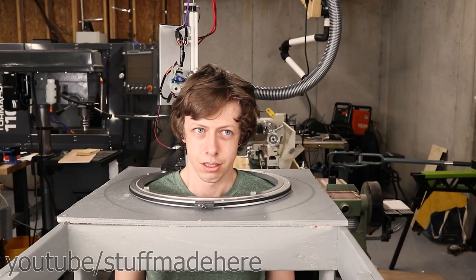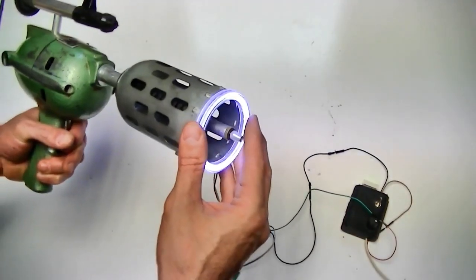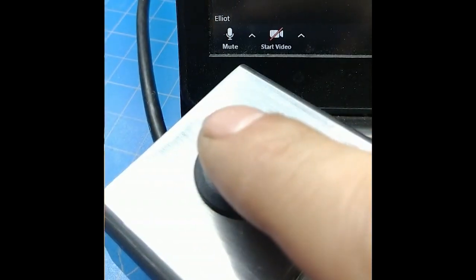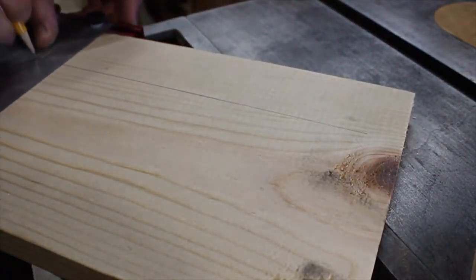This week on Maker Update: a haircut from a robot, the Atomic TV, making a toy ray gun, a physical mute button for Zoom, articulating skeleton fingers, and precision marking rulers. Hey, I'm Donald Bell, back again with another Maker Update.